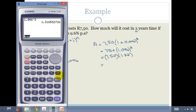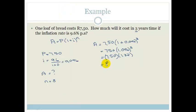And then I multiply this by 7.50. And I get with my loaf of bread, it's going to cost me 9.87 in three years' time. So that's how inflation works.